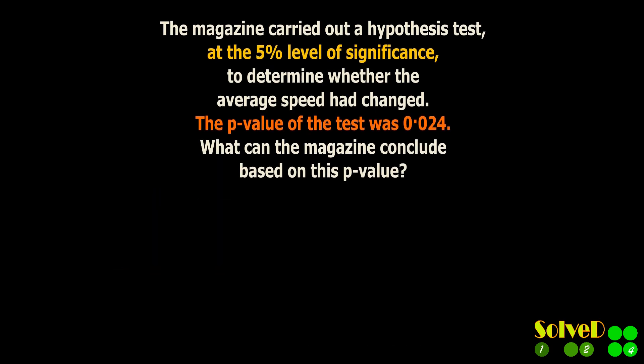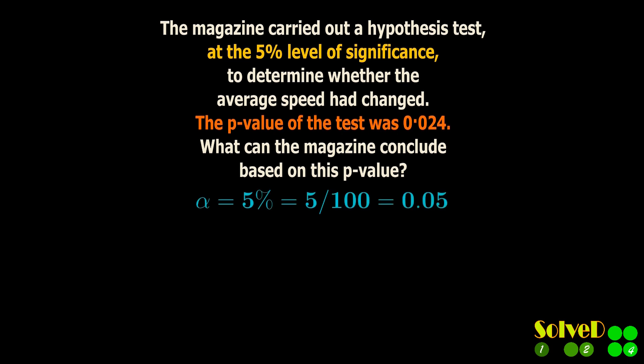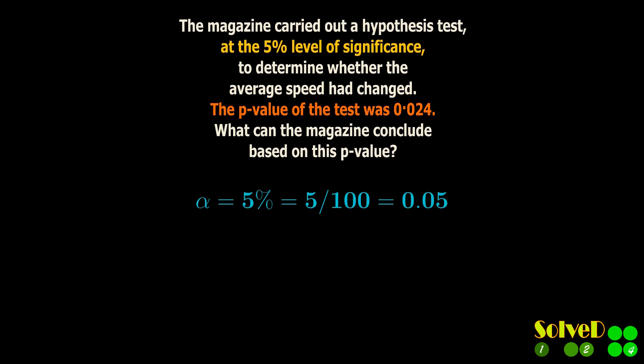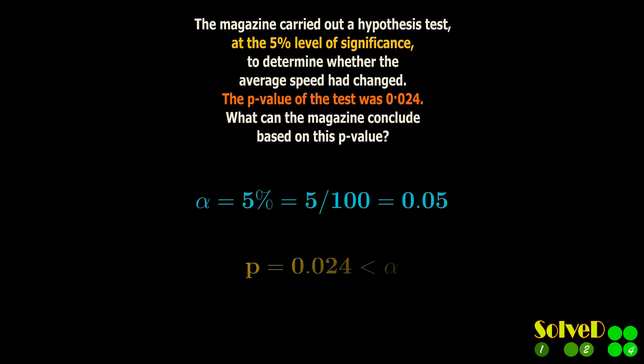Consider this example. The magazine carried out a hypothesis test at the 5% level of significance to determine whether the average speed had changed. The p-value of the test was 0.024. What can the magazine conclude based on this p-value?